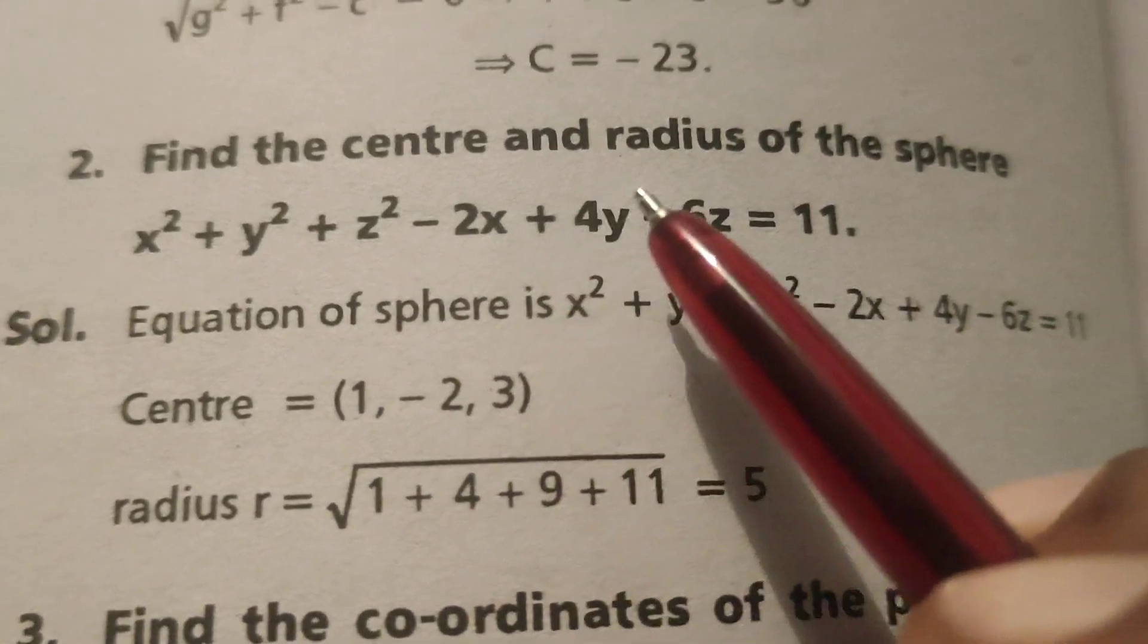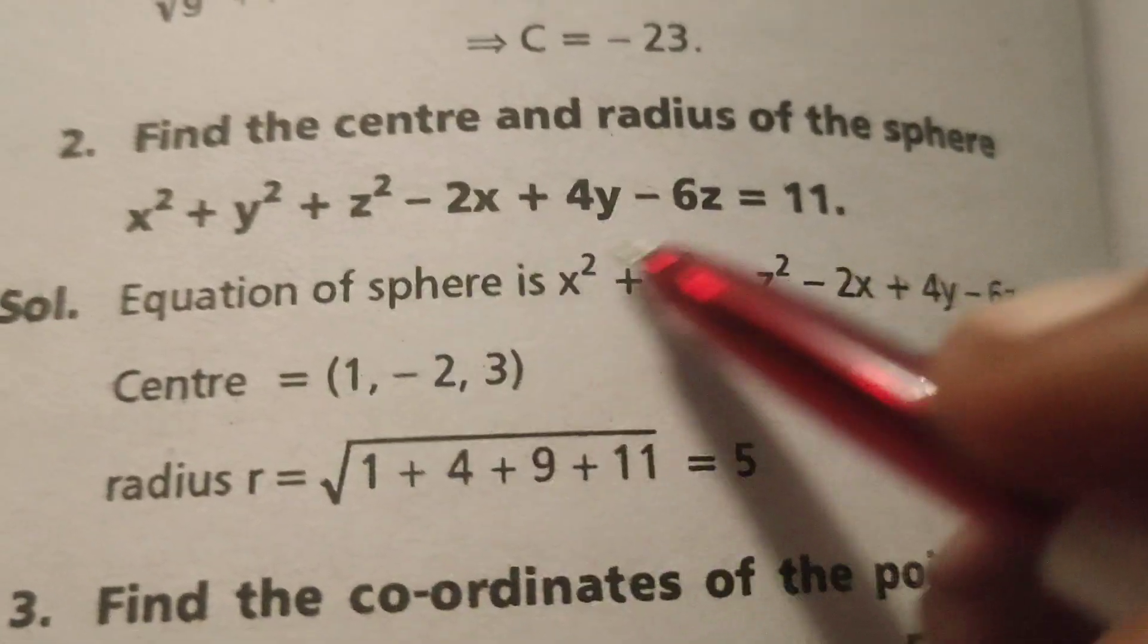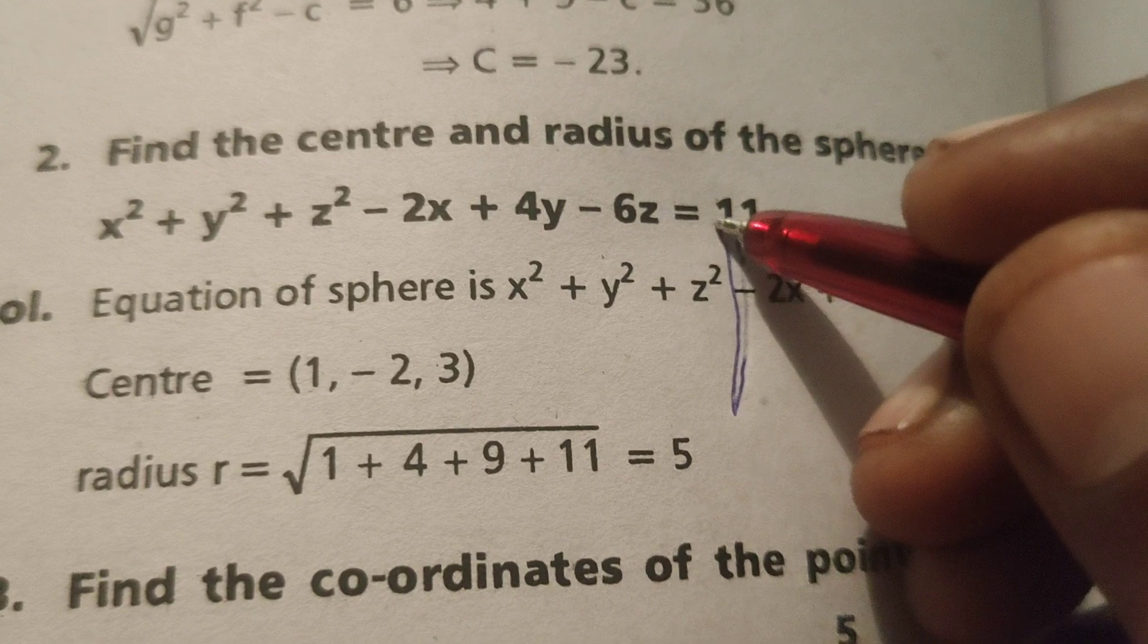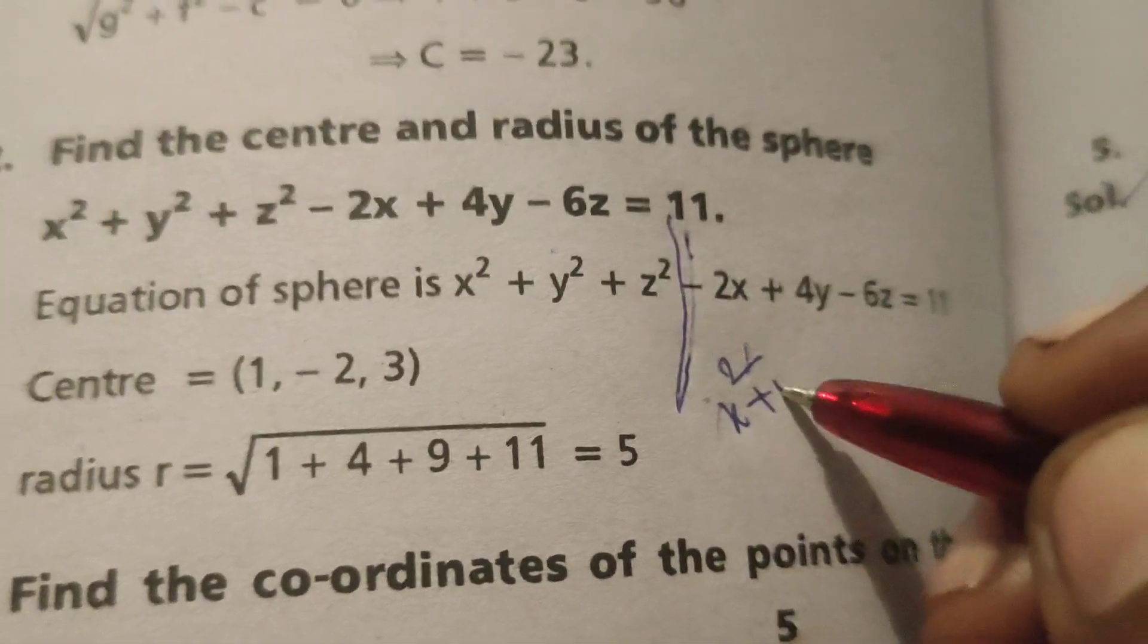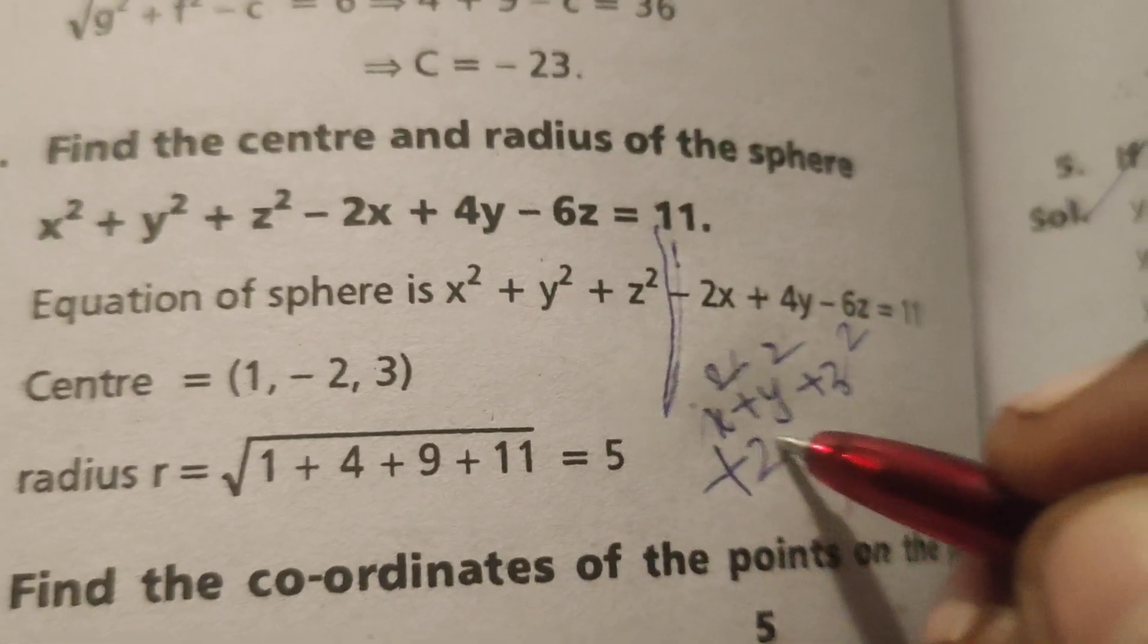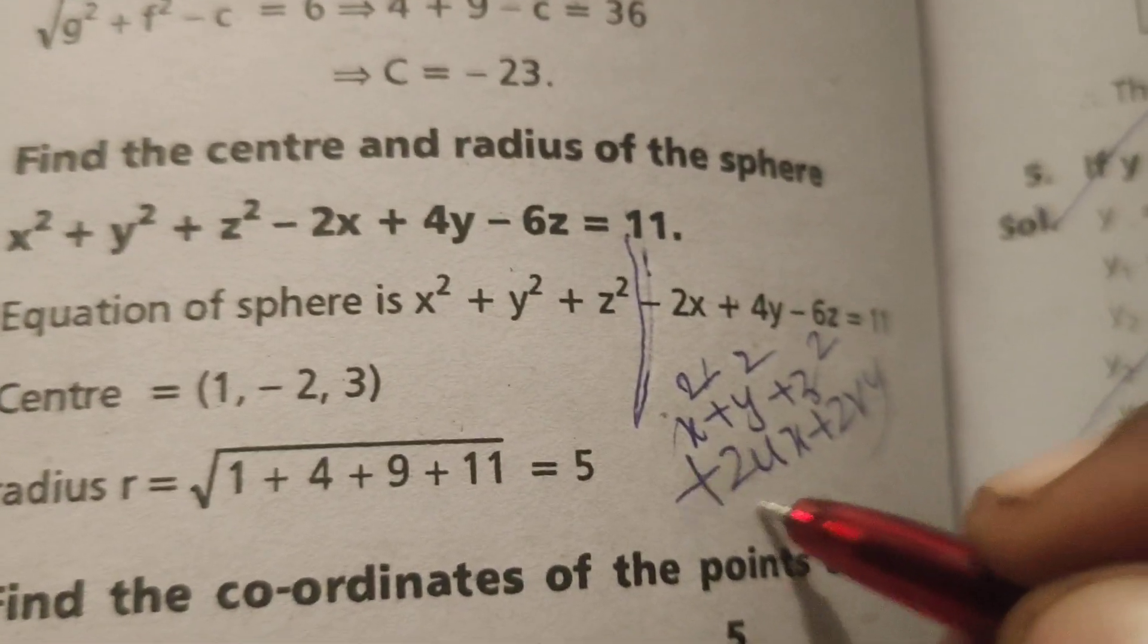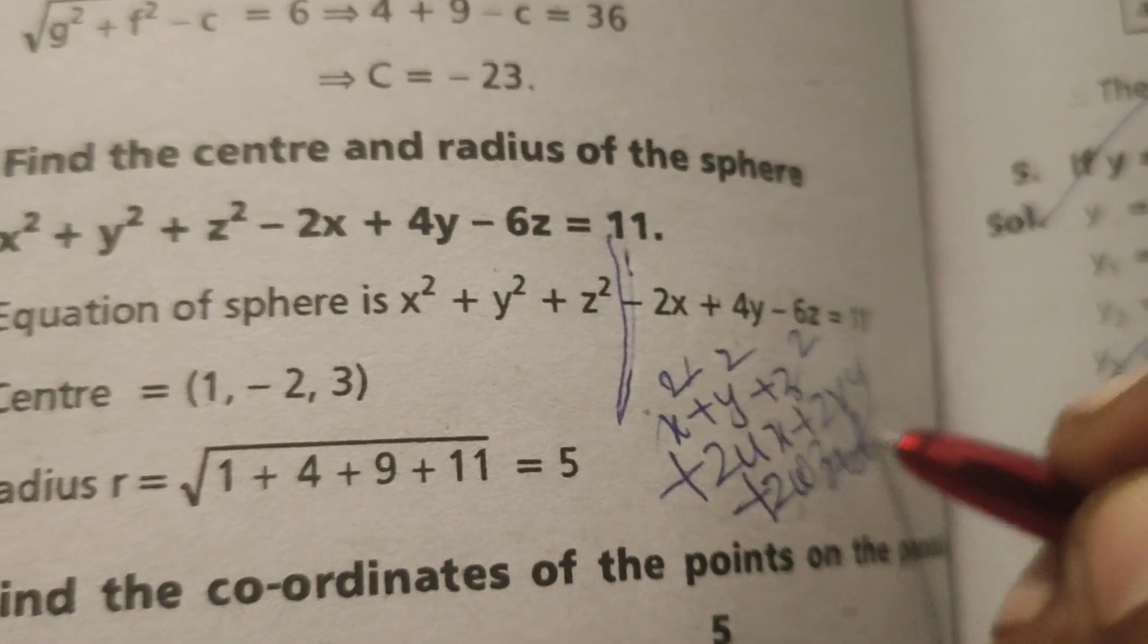Find the center and radius of the sphere. This is the sphere equation. Comparing this equation by standard sphere equation, x square plus y square plus z square plus 2ux plus 2vy plus 2wz plus d equals to 0.